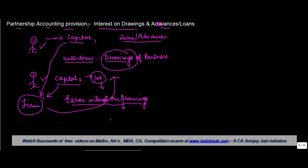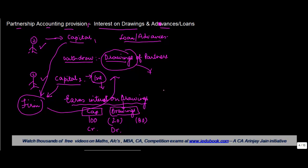For the firm, it earns interest on drawings. Just like interest on capital, you need to see the dates when drawings have been made. When drawings are made, the capital account of the partner will reduce. So let's say you contributed 100 as capital and you took back 20 rupees — that is known as drawings. Capital has a credit balance, and to reduce it in accounting you give it a debit, but instead of debiting the capital account directly, you debit the drawings account.